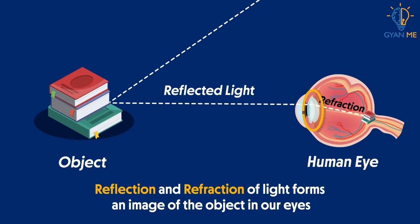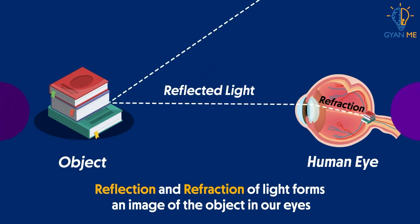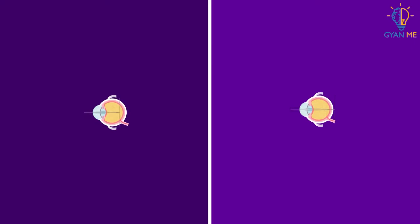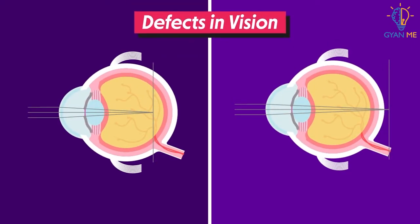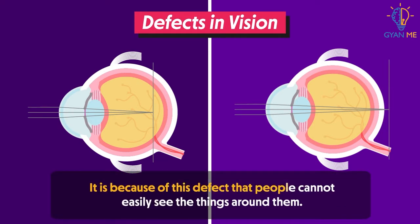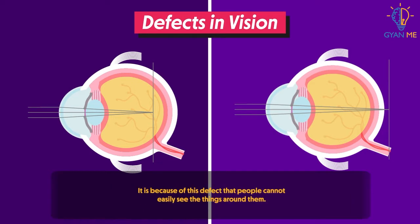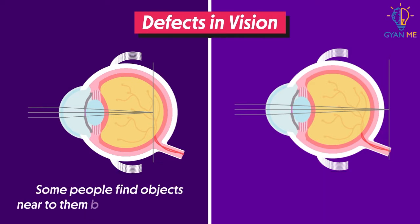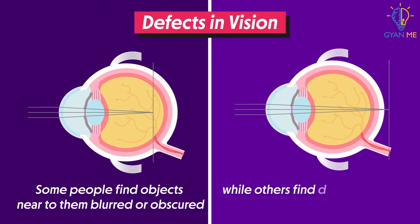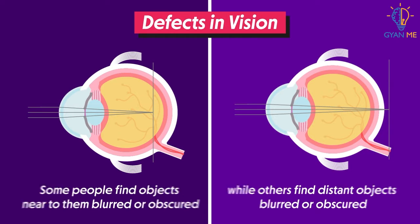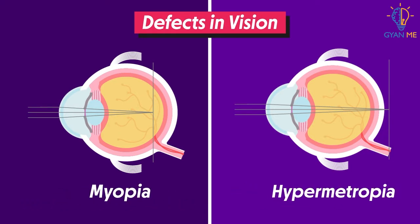But how does this lens work in the human eye? We will learn about it in this chapter. If this lens in the eye does not work properly, then the person will develop some sort of defects in his vision. It is because of this defect that people cannot see things around them easily. Some people find objects near to them blurred or obscured while others find distant objects blurry. They are respectively called myopia and hypermetropia.